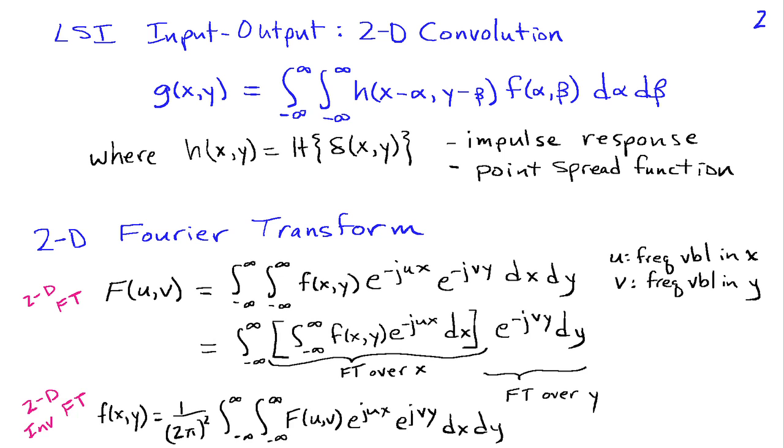Now the inverse Fourier transform in 2D is again very similar to what we'd expect based on our 1D experience. We have 1 over 2 pi squared now, double integral minus infinity to infinity, F of u comma v, e to the j u X, e to the j v Y dx dy. And this has a familiar form of a sum of complex sinusoids.